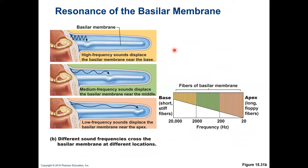Sounds of different frequencies vibrate the basilar membrane at different locations. High frequency sound vibrates the basilar membrane near the base, medium frequency sound displaces it near the middle, and low frequency sound vibrates it near the apex. Depending on where the basilar membrane is vibrated, we can perceive the frequency of the sound waves.